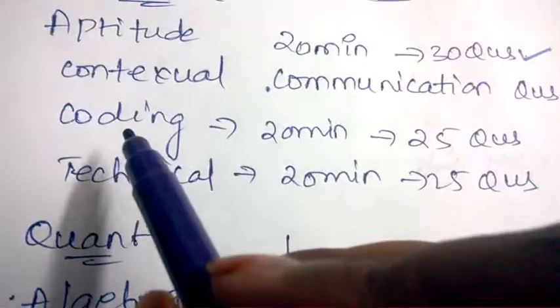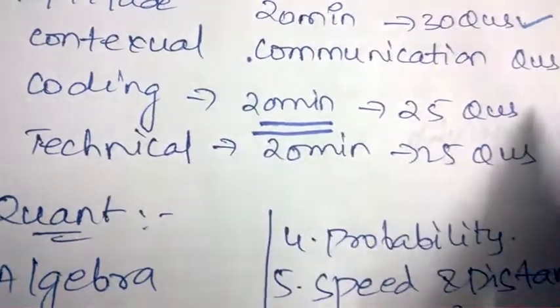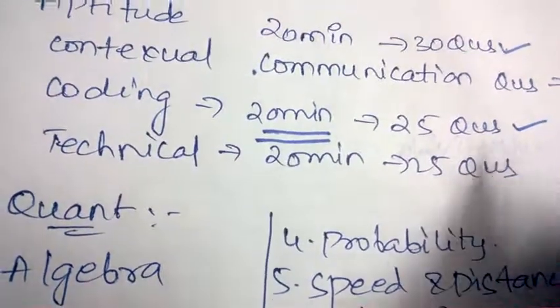Coding questions will be included in the written test. They'll be giving you 20 minutes and 25 questions need to be solved in this time span.